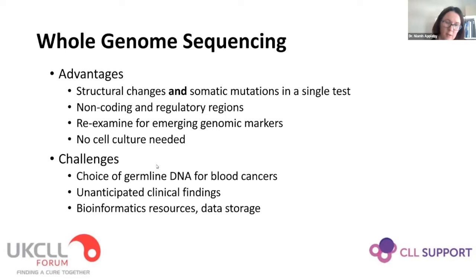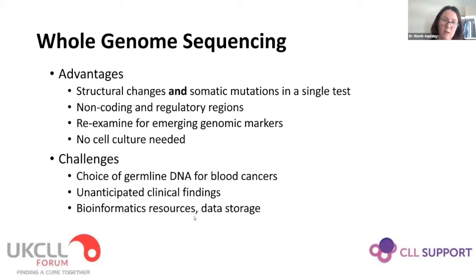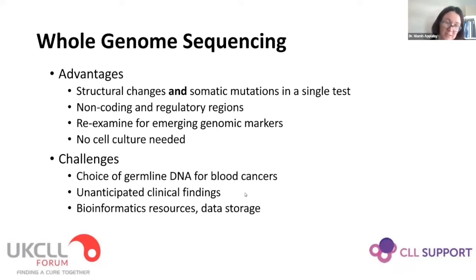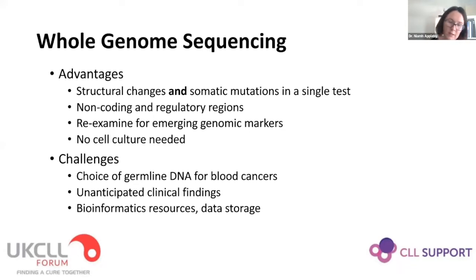There are challenges with whole genome sequencing. It is quite resource intensive, especially in terms of bioinformatics and computational resources and data storage. For blood cancers, we have to be mindful of what we use as the source of normal DNA. When sequencing a tumour we are interested in differences between tumour DNA and the healthy person's normal DNA. For bowel cancer you can use peripheral blood as normal DNA, but that is not true for leukemia — you need to think carefully about what to use as the normal DNA in this patient population.